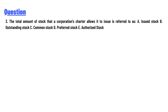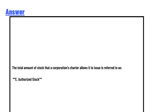The total amount of stock that a corporation's charter allows it to issue — it refers to: issued stock, outstanding stock, common stock, preferred stock, or authorized stock? The answer is: the total amount of stock that a corporation's charter allows it to issue is referred to as authorized stock. This is the correct answer.